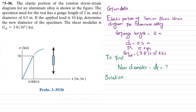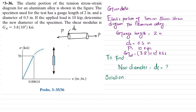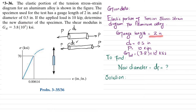We have a diameter rod with load P applied. The original diameter is d₀. After applying this tensile load, the diameter will reduce and the length will increase. We need to find the final diameter df. All data are given: gauge length is 2 inches, original diameter is 0.5 inch, applied load is 10 kips, and shear modulus is 3.8 × 10³ ksi.